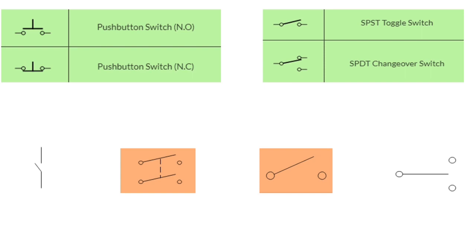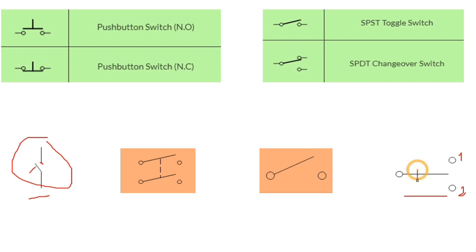There are a lot of types of switches — some normal and some complex. This is a normal switch: we have a pole and we have a throw. We also have another switch with a double throw — this is the first throw and this is the second throw, with one pole. This is a single pole double throw switch.